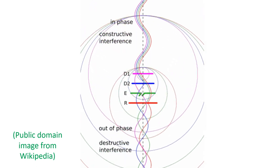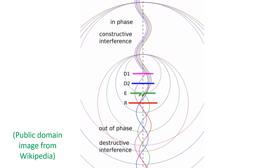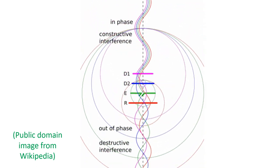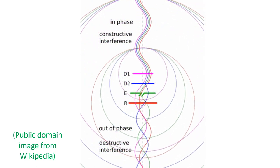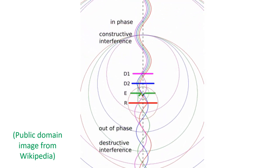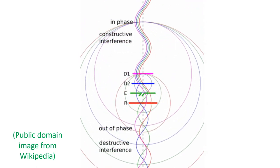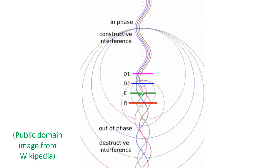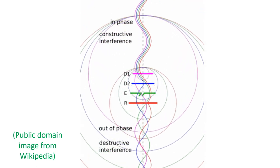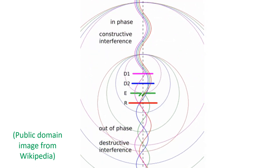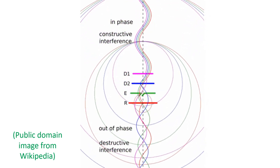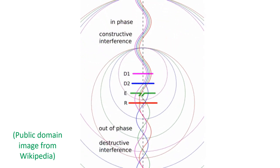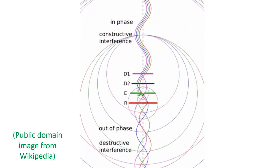The parasitic elements act as resonators by absorbing and re-radiating the electromagnetic waves from the driven element with a phase difference. There is constructive interference of these electromagnetic waves in the forward direction as they are in phase, and destructive interference in the reverse direction as the waves are out of phase.